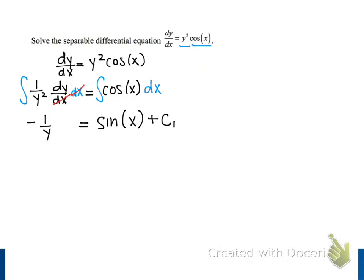Next, we multiply both sides by negative 1, and we get 1 over y is equal to negative sine of x. Instead of writing minus c1 here, I'm going to replace the unknown constant negative c1 with the simpler plus c, which still represents an unknown constant.